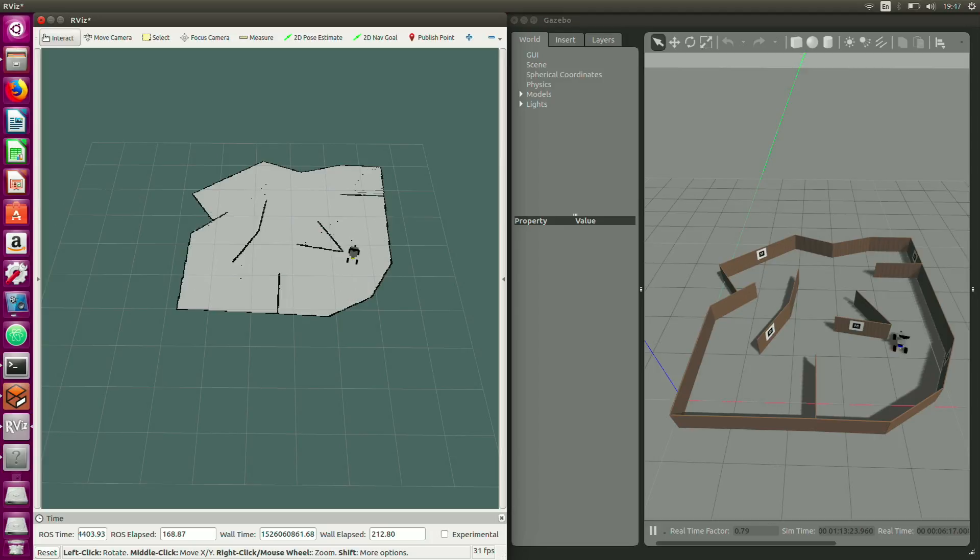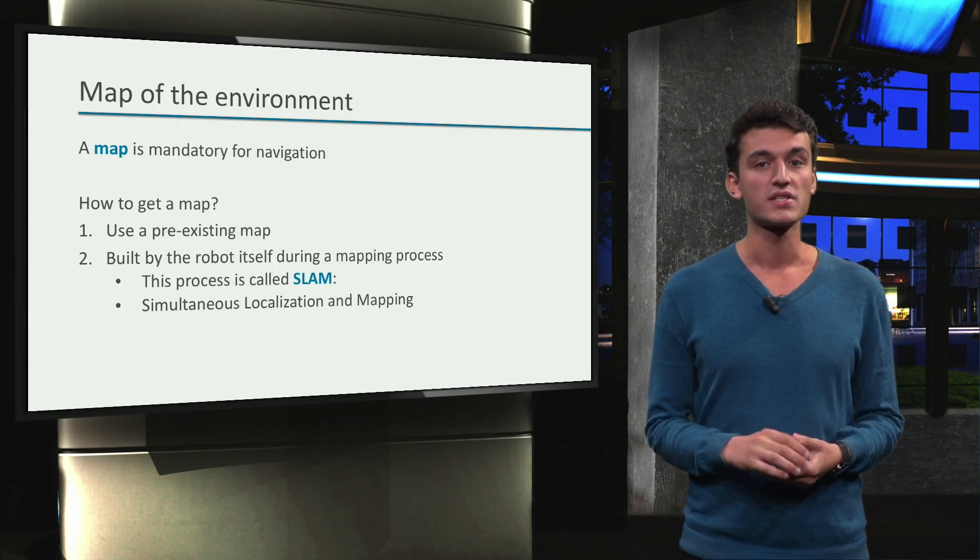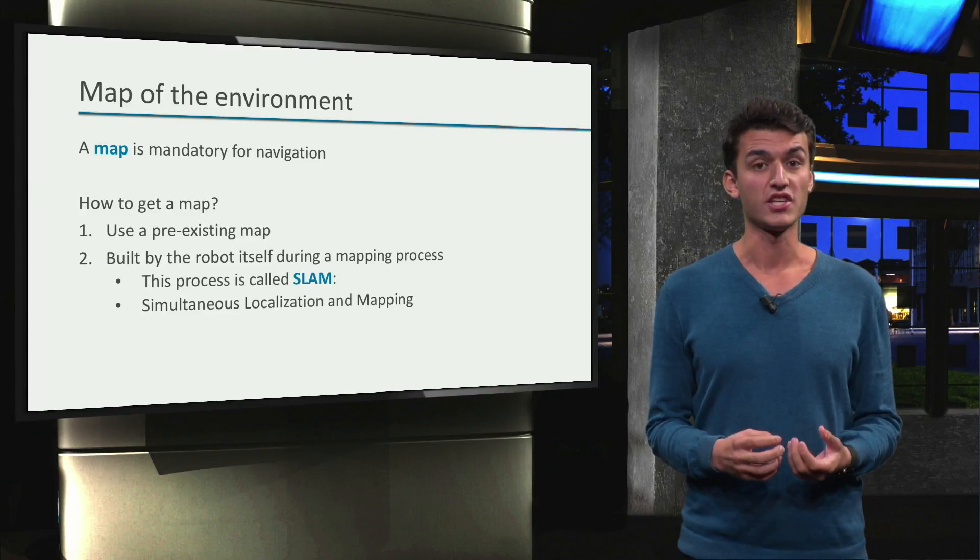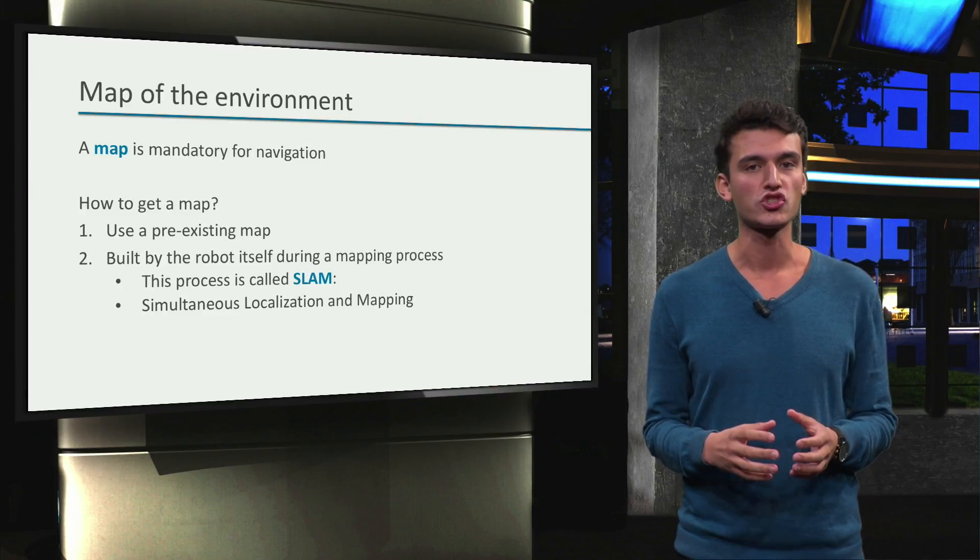We see that as we move, the map is being built. This process is called simultaneous localization and mapping. That means the robot is building a map while keeping track of its own position.